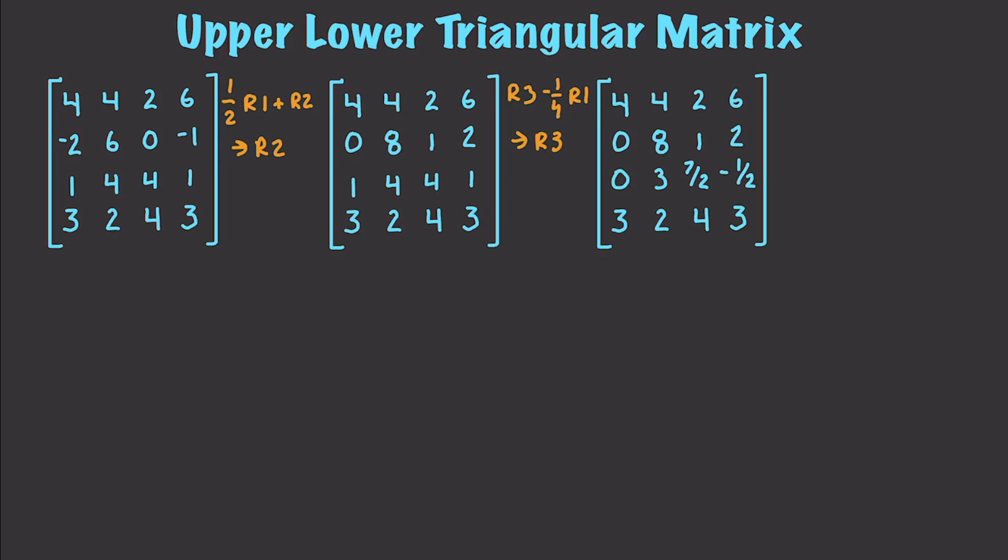Up next, I'm going to want to zero out the fourth row in the first element. So I'm going to get R4 minus 3 over 4 times R1. And when I do that, this becomes a 0, this becomes a negative 1, this becomes 5 over 2, and this becomes negative 3 over 2. Now what I want to do is come in and, on the third row, get rid of that 3 that we have right there.